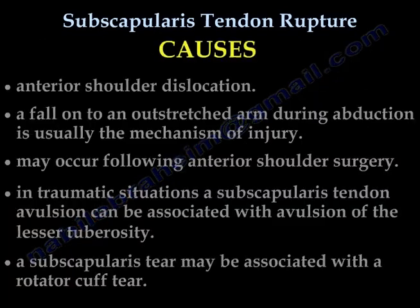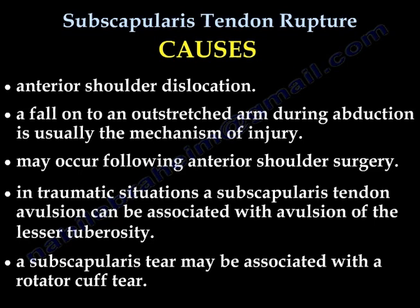Causes include anterior shoulder dislocation. A fall onto an outstretched arm during abduction is usually the mechanism of injury. Rupture may also occur following anterior shoulder surgery. In traumatic situations, a subscapularis tendon avulsion can be associated with avulsion of the lesser tuberosity. A subscapularis tear may also be associated with a rotator cuff tear.